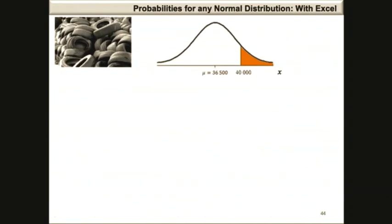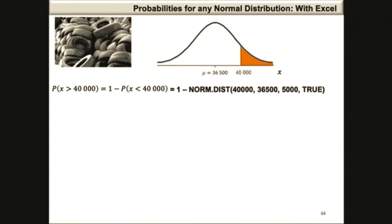Using our Excel functions, the probability that x is greater than 40,000 equals 1 minus the probability of x less than 40,000. This is equal to 1 minus NORM.DIST(40000, 36500, 5000, TRUE), which equals 0.24196.